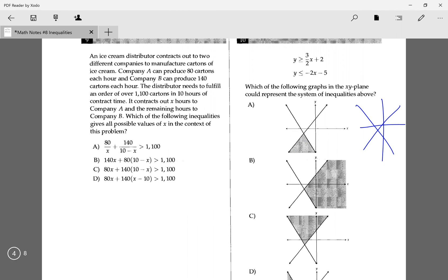Now that you have that, I would first see which line is 3 over 2x plus 2. Since it's a positive slope, it's this line. And the negative 2x over 5 is this line.